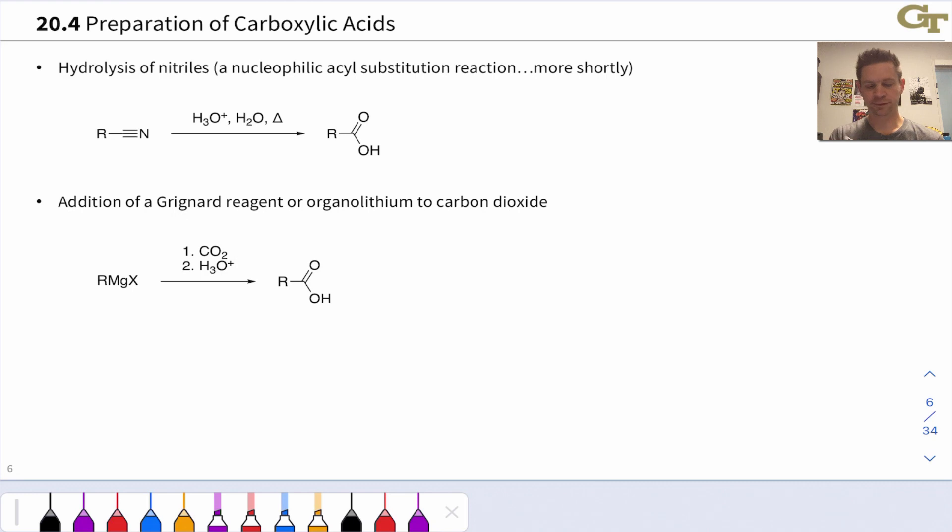Here are two more methods for the preparation of carboxylic acids. We'll have more to say about this first reaction a little bit later on in this unit, but for the time being, just to put it under the umbrella of ways to make carboxylic acids, I wanted to mention it here, the hydrolysis of nitriles. This is, on some level, a nucleophilic acyl substitution reaction, which we'll touch on a little bit later, but it involves the treatment of a nitrile with acid, very strong acid, in aqueous conditions, water.